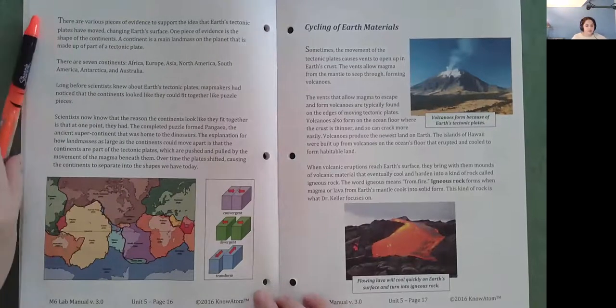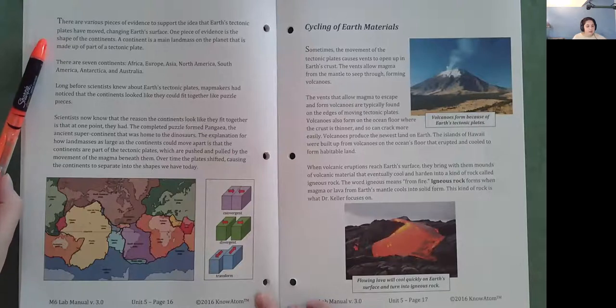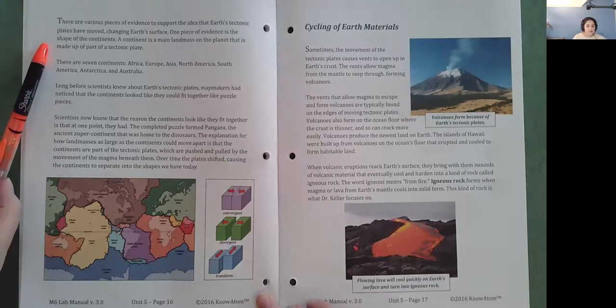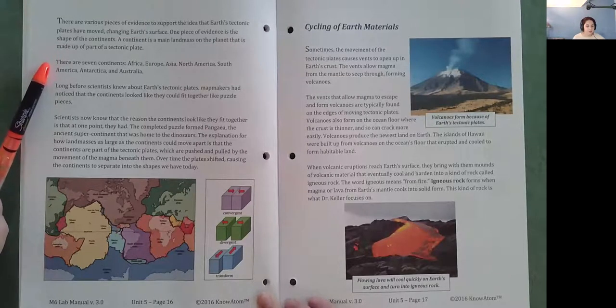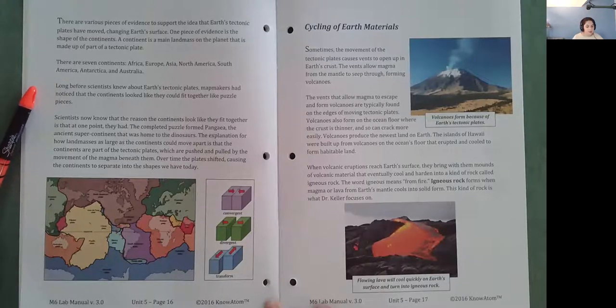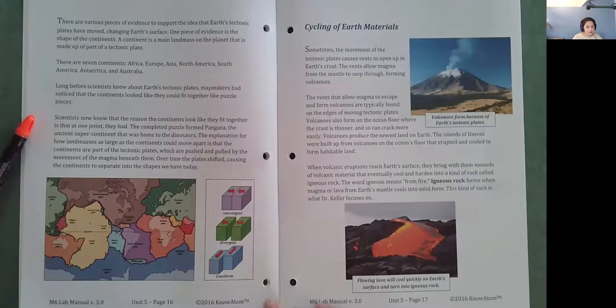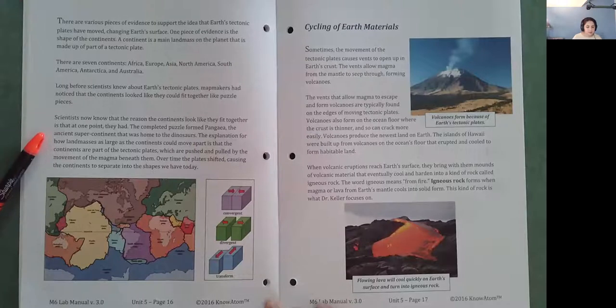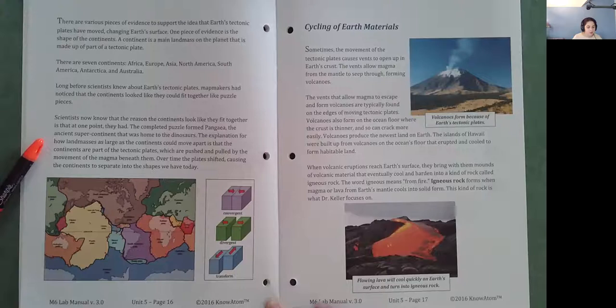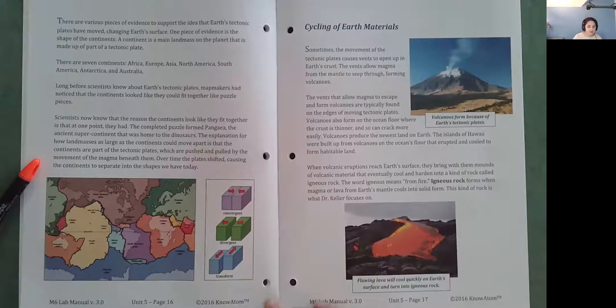There are various pieces of evidence to support the idea that Earth's tectonic plates have moved, changing Earth's surface. One piece of evidence is the shape of the continents. A continent is a main landmass on the planet that is made up of part of a tectonic plate. There are seven continents: Africa, Europe, Asia, North America, South America, Antarctica, and Australia. Long before scientists knew about Earth's tectonic plates, map makers had noticed that the continents looked like they could fit together like puzzle pieces. Scientists now know that the reason the continents look like they fit together is that at one point they had. The completed puzzle formed Pangea, the ancient supercontinent that was home to the dinosaurs. Over time, the plates shifted, causing the continents to separate into the shapes we have today.